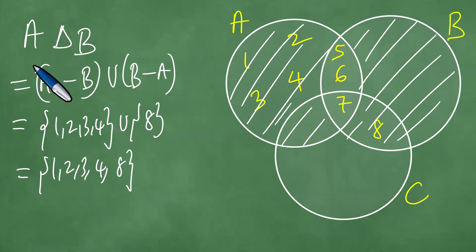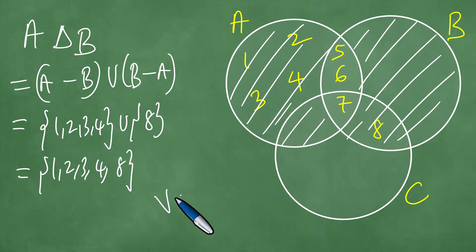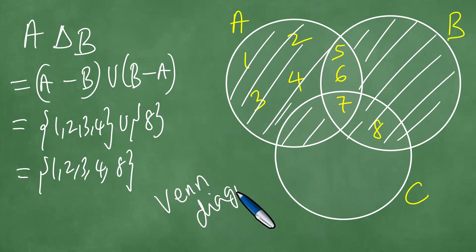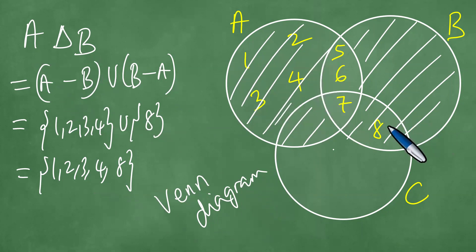Looking at the Venn diagram, the symmetric difference of A and B consists of the elements in the shaded parts — those are 1, 2, 3, 4 together with 8. This is called the Venn diagram, a very important diagram.